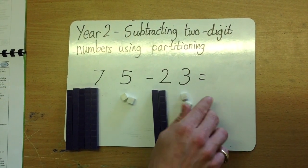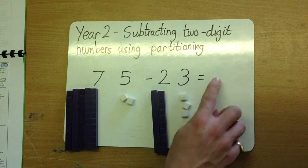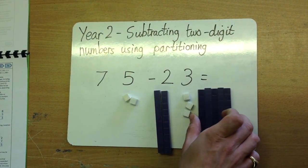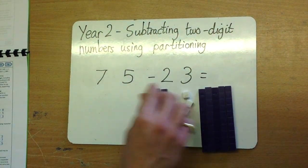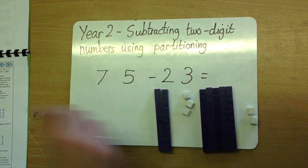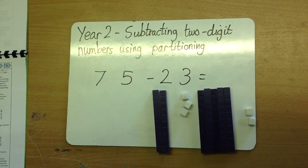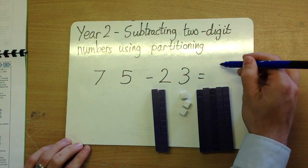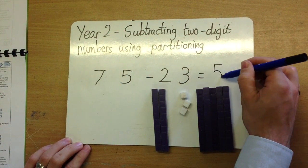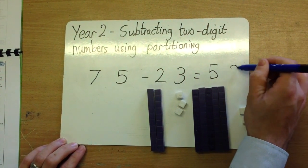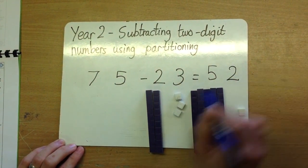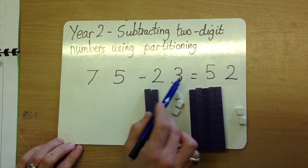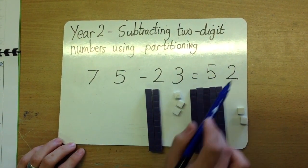Now it's time to write our answer. What are we left with? We're left with 5 tens and 2 units. So, 75 subtract 23 equals 52.